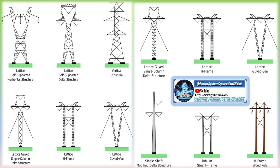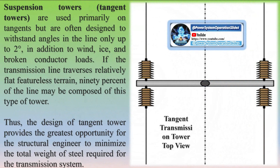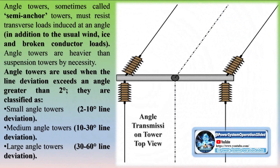The structures commonly used on transmission lines are either lattice type or pole type. Lattice structures are usually composed of steel angle sections. Poles can be wood, steel, or concrete, and each structure type may be self-supporting or guide-supported by cables. Pole type structures are generally used for voltages of 345 kV or less, while lattice steel structures are favored for higher voltage levels. Wood pole structures can be economically used for relatively short transmission distances and lower voltages.